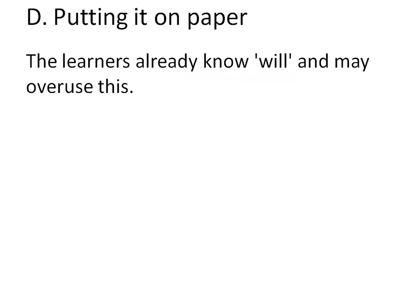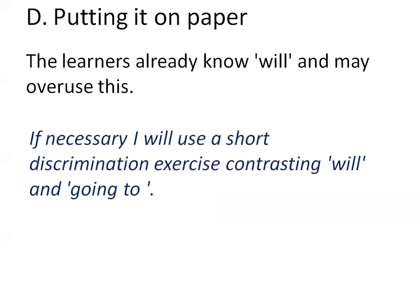Coming back to the problems: the first problem was learners already know 'will' and may overuse it. A possible solution: if necessary, use a short discrimination exercise contrasting 'will' and 'going to,' or maybe some other ways of talking about the future. This way you could try to avoid or address this problem.